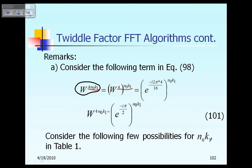Now let's see what the definition of W is. W alone — just W without the power of 4 — is by definition equal to E raised to the power of minus i times 2pi divided by capital N.